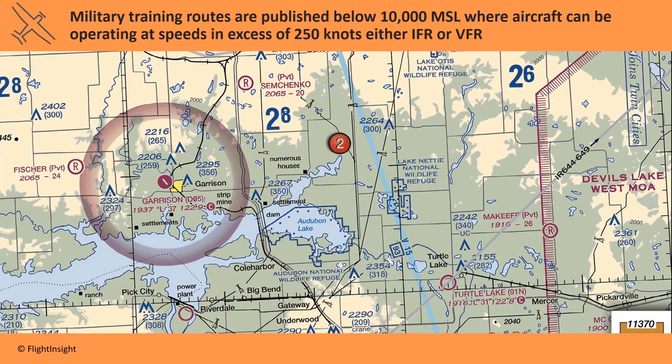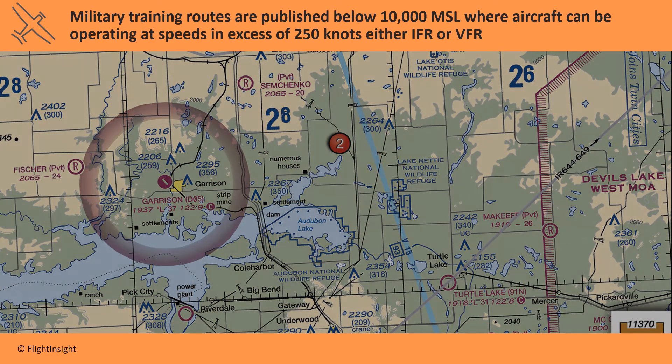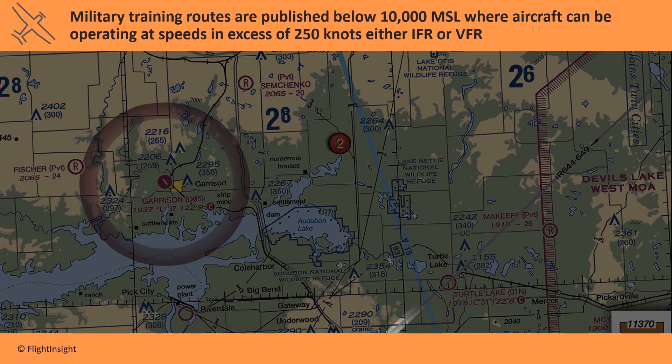Military training routes are published below 10,000 MSL to warn pilots about where aircraft can be operating at speeds in excess of 250 knots, either IFR or VFR.